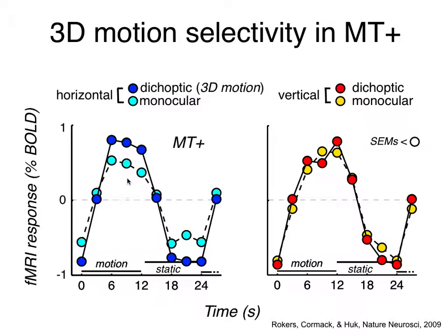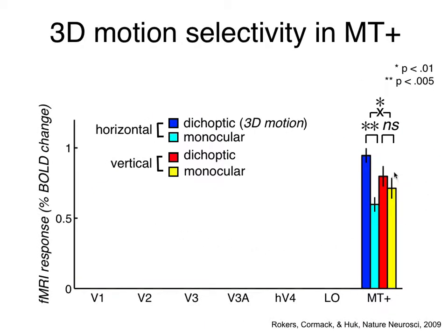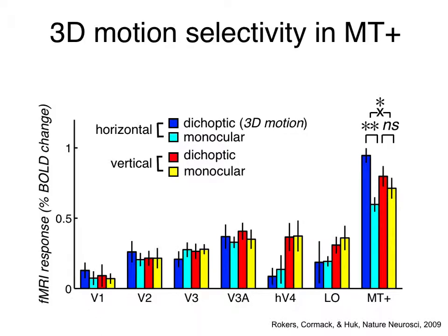We quantified this amplitude by making an estimate and plotting it. The estimated amplitude of the modulation is significantly different in the horizontal condition, and not significantly different in the vertical condition — a hallmark of the response you'd want to see if an area were selective to 3D motion above and beyond selectivity to motion or disparity information alone. One might ask whether this signal is simply inherited from an earlier area, such as V1. We performed the same analysis in earlier visual stream areas and found that we do not get this pattern in any early area, which places area MT squarely in the processing of 3D motion information.